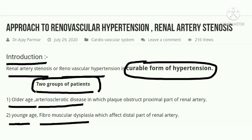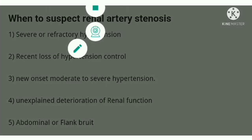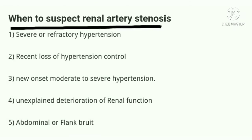In the older age group, atherosclerosis involves the proximal part of the renal artery. In the younger age group, fibromuscular dysplasia involves the distal part of the renal artery. Now, the question is: when should we suspect renal artery stenosis or renal vascular hypertension?